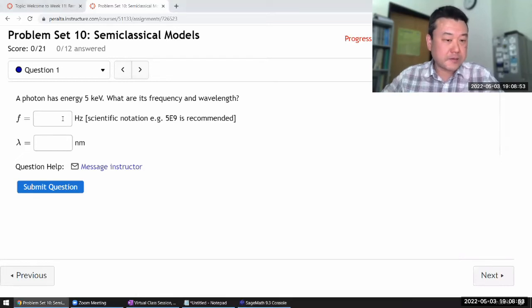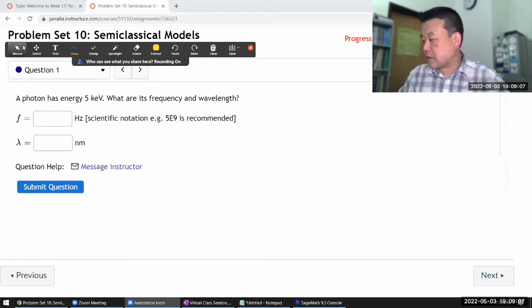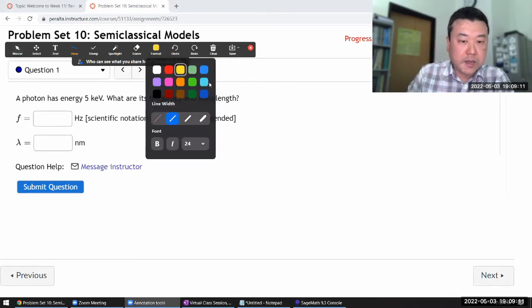So question one, it says a photon has energy five kilo electron volts. So I think this is just as we were introducing quantum mechanics, we have introduced some quantum assumptions. And this is what it relates to.